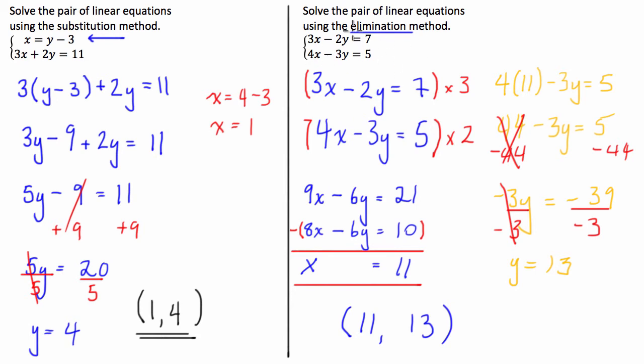In the elimination method we're trying to get the coefficients of one of the variables to be equal to the same thing so we can either subtract or add them together to cancel it out. As you can see, what we did here, we got 6y minus negative 6y was zero so the y's basically cancelled each other out.